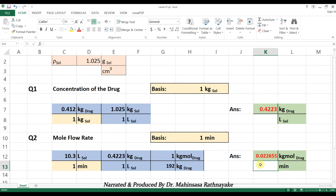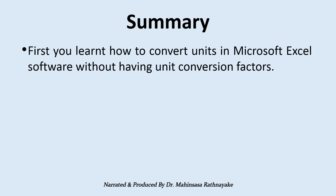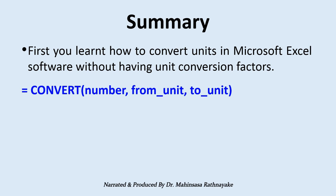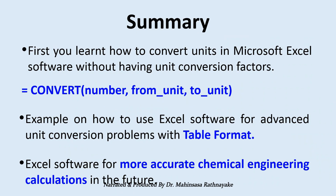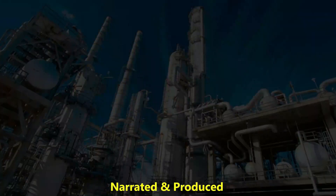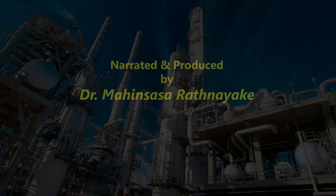Like this, you can use Microsoft Excel to make unit conversion problems easier. In this video lesson, you first learned how to convert units in Microsoft Excel without needing unit conversion factors, using the CONVERT function with the format =CONVERT(number, from_unit, to_unit). Then you learned how to use Excel for advanced unit conversion problems with a worked example using the table format method. You can use these methods for more accurate chemical engineering calculations in the future. That's the end of our video lesson — have a nice day and goodbye.